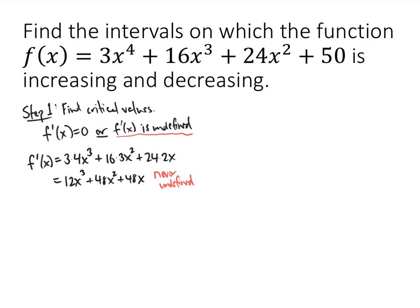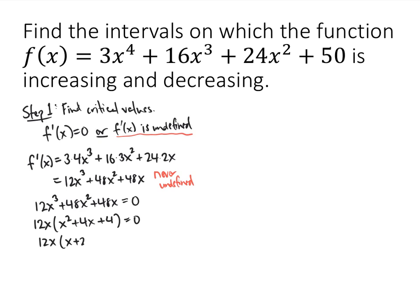But the derivative might equal 0. To find out when it equals 0, we set it equal to 0 and solve: 12x cubed plus 48x squared plus 48x equals 0. Because this is a polynomial equation, we try to solve by factoring. We can start by factoring out a 12x, which gives us x squared plus 4x plus 4. We can factor this further because x squared plus 4x plus 4 factors as (x plus 2) times (x plus 2).